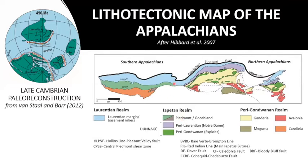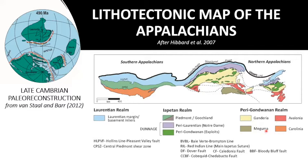This slide shows a simplified map of the Appalachians after Hibbard et al., breaking them down into three fundamental divisions: the Laurentian realm, Iapetan realm, and Peri-Gondwanan realm. The Laurentian realm includes rocks of the Laurentian margin and basement inliers. The Iapetan realm in the southern Appalachians comprises the Piedmont and Goochland terrains, and in the northern Appalachians it's part of the Dunwich zone, subdivided into the Peri-Laurentian or Notre Dame subzone. The Peri-Gondwanan realm contains Ganderia, Avalonia, Meguma, and Carolinia — microcontinental fragments that rifted off Gondwana and traveled across Iapetus, accreting to the Laurentian margin during several events.